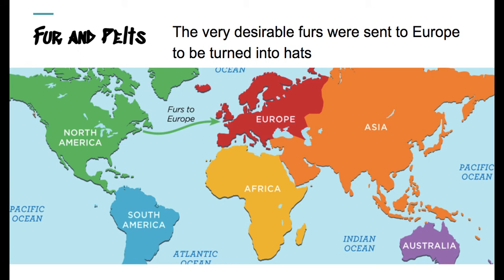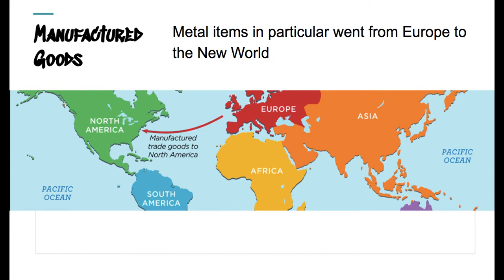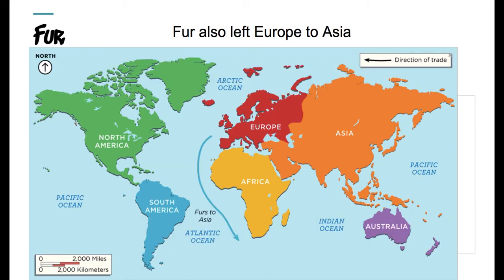Looking at the trade route maps, you'll see that the furs and pelts follow a green line — they first go over to Europe. After that, with the trade, those metal items come back to North America, and those metal items are the ones traded in. The furs also went even further, going out of Europe around to Asia.